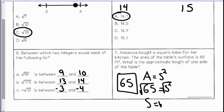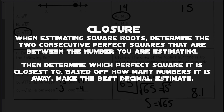One side length is the square root of 65. To estimate, I know it's between the square root of 64 and the square root of 81, which is 8 and 9. The square root of 65 is very close to the square root of 64, which is 8, so a good decimal estimate would be 8.1.